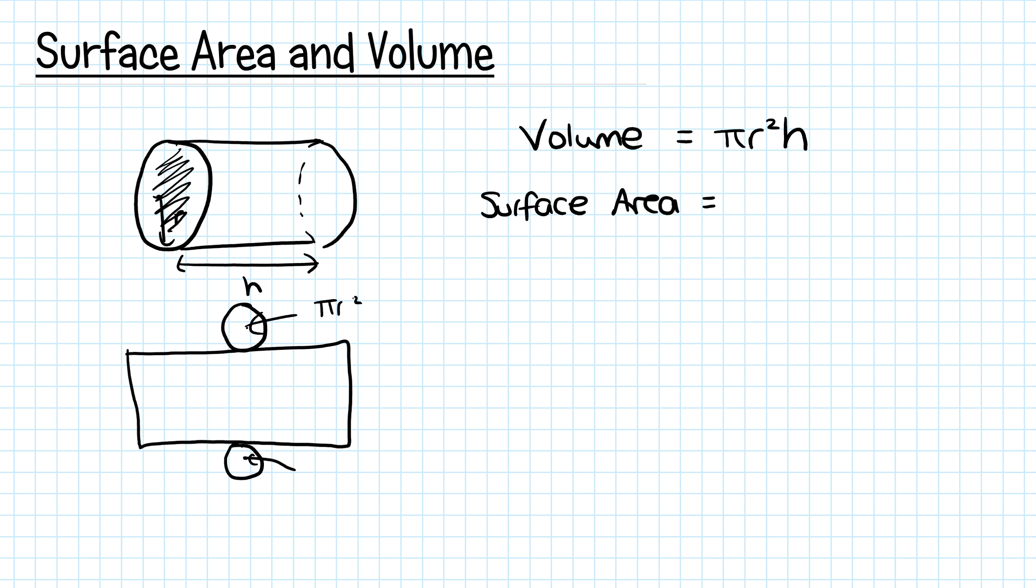So that's 2πr² for those two circles. To work out the area of the rectangle, I need to know its length, which is the same as the circumference of the circle, 2πr. So this area would be 2πrh, and that's your surface area of the whole cylinder.